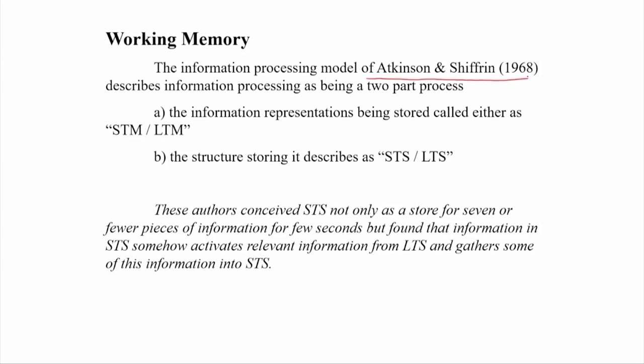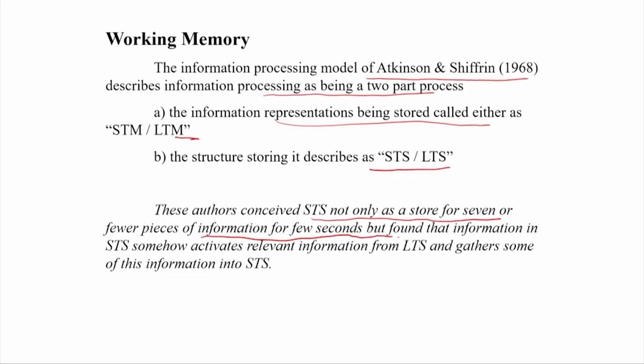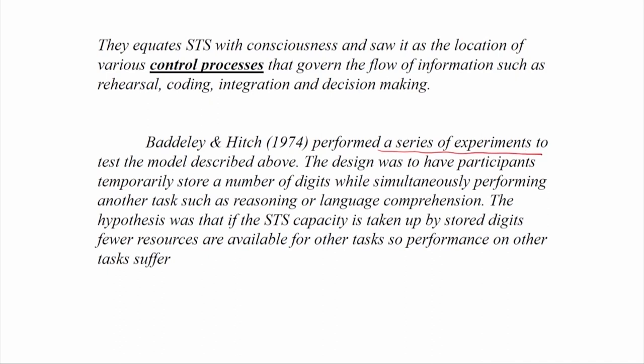The information processing model of Atkinson and Shiffrin (1968) described information processing as a two-part process: information representations stored either as STM or LTM, and the structures and processes which move this information. These authors conceived of STM not merely as a store for seven or so pieces of information for a few seconds, but found that information in STM somehow activates relevant information from LTM and gathers some of this into the short-term store.